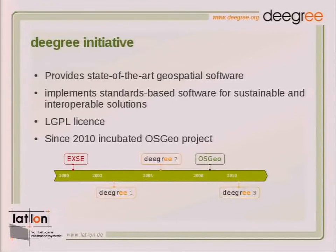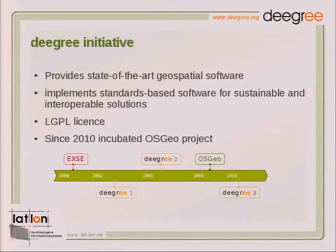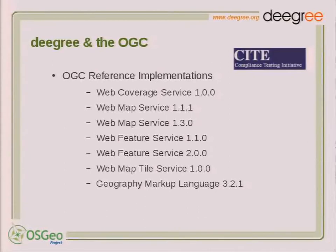In the year 2000, degree was founded at the University of Bonn as the project XSE, and there was a follow-up renaming it into degree. Then we had degree 2, which was the biggest implementation of OGC standards in the open source world. I think it was 2009 when we started the OSGeo incubation, which we graduated in 2010. Also in 2010 we had degree 3, and now we are at version 3.3.